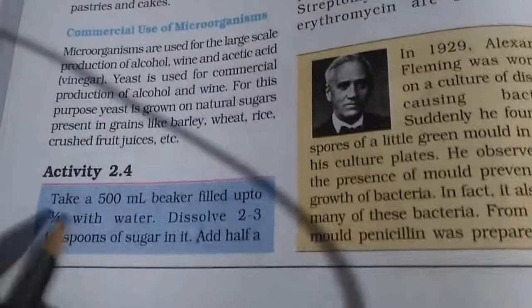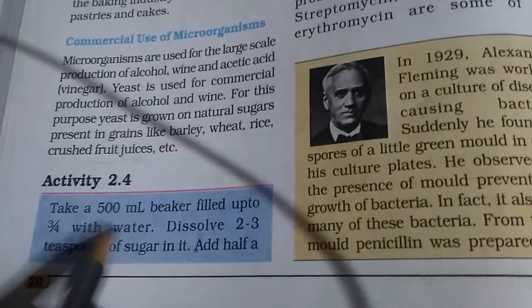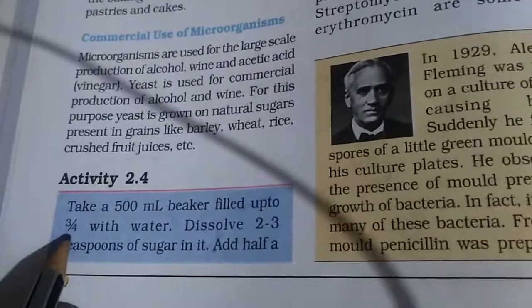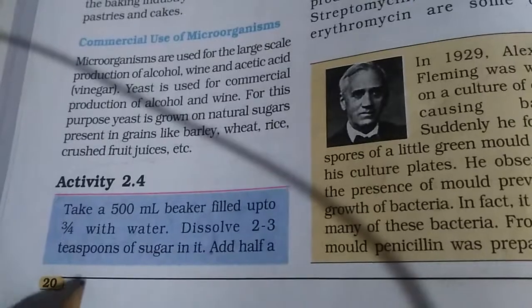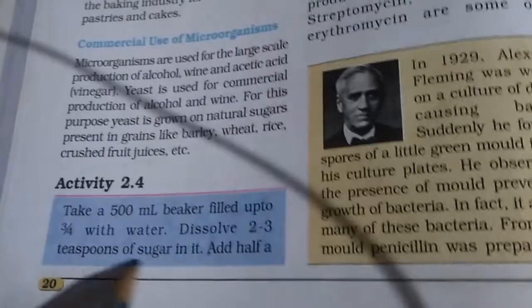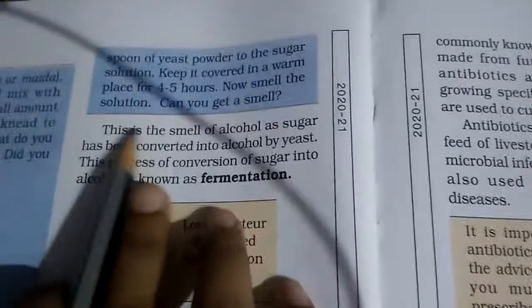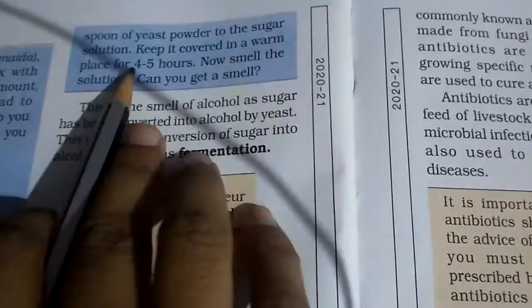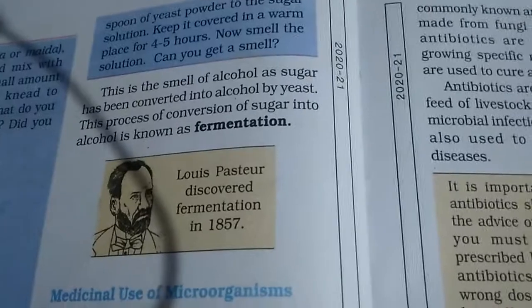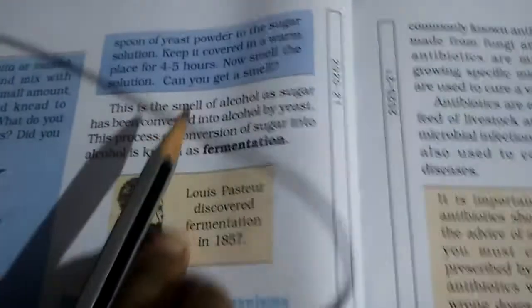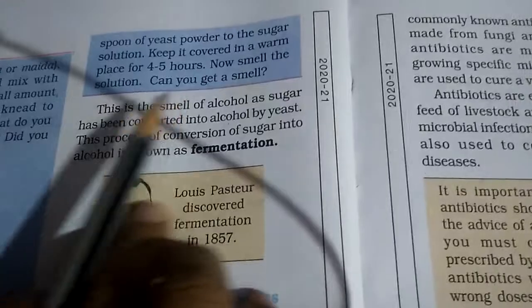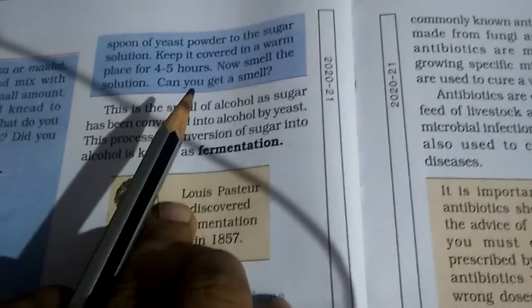Activity 2.4: Take a 500 ml beaker filled up to three-quarters with water. Dissolve 2 or 3 teaspoons of sugar in it. Add half a spoon of yeast powder to the sugar solution. Keep it covered in a warm place for 4-5 hours. Now smell the solution. Can you get a smell?